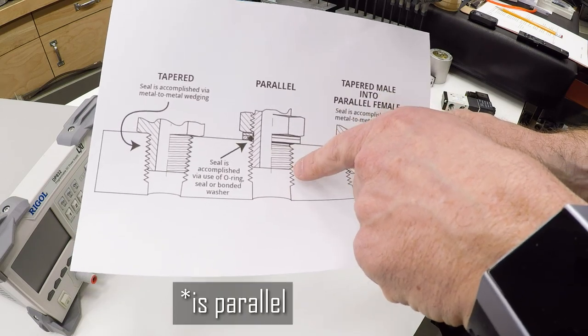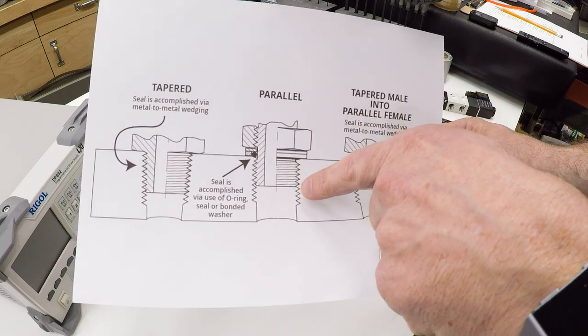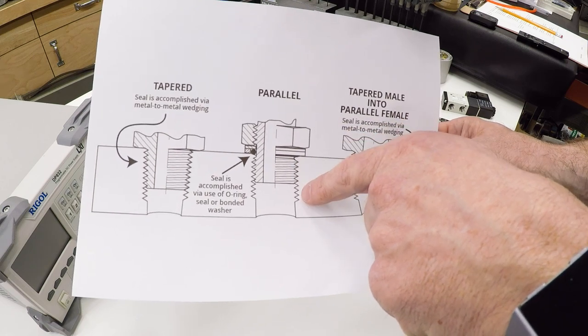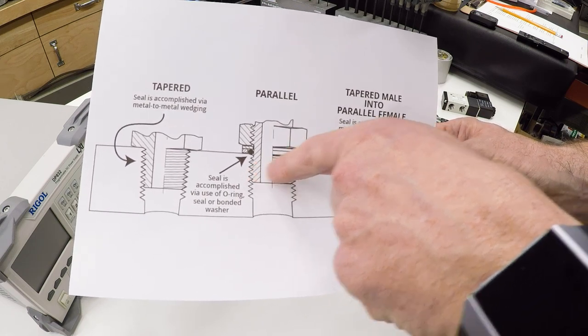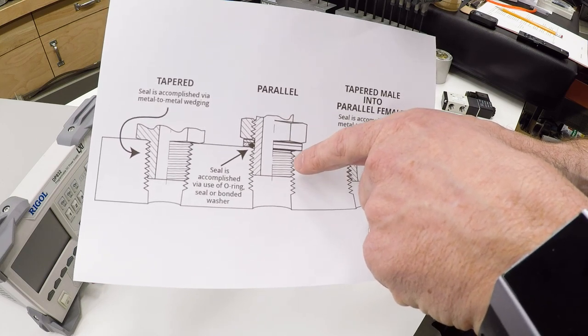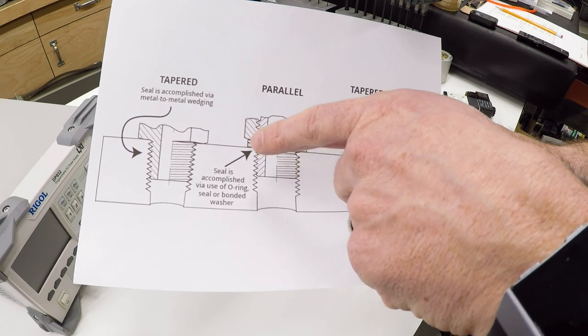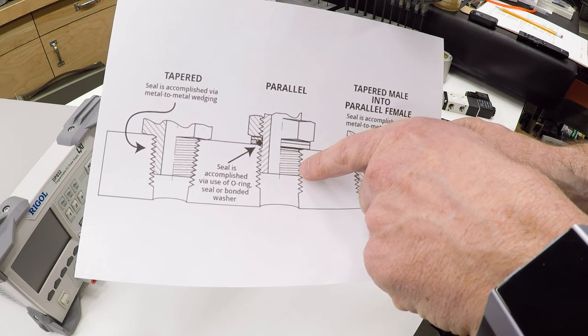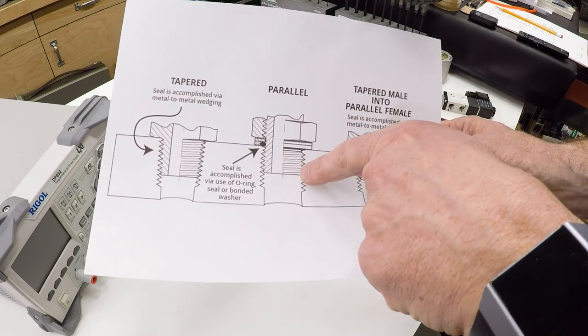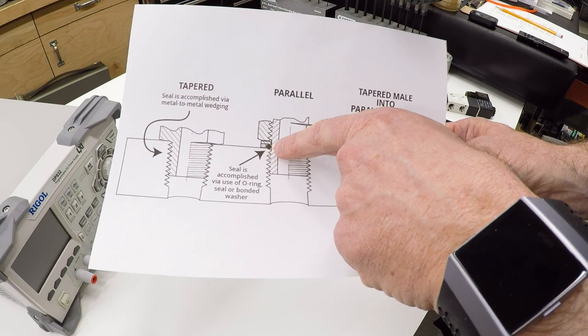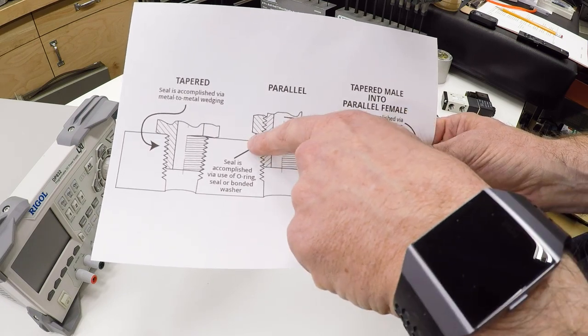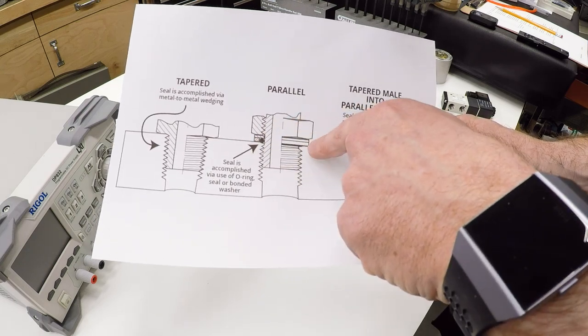Another common thing that you'll run into are parallel threads, where the hole is completely parallel, not tapered, and the fitting is not parallel and not tapered. In this scenario, the fitting does not seal into the thread. At least on the threads, there is no seal. There are specs for these to be relatively tight for rigid mechanical joints. There are specs for these to be relatively loose for mechanical joints that are easy to assemble and disassemble. These are commonly intended for a face seal.